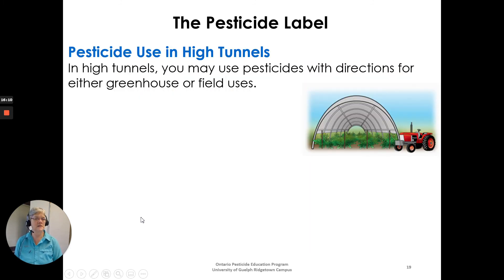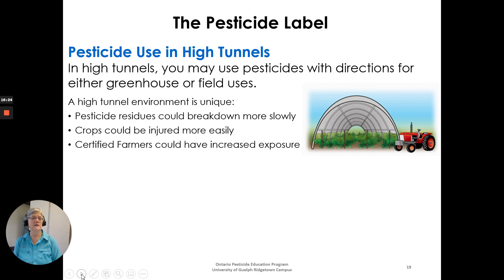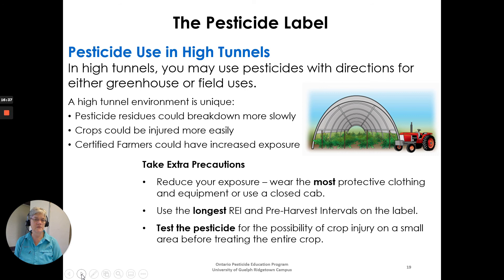In high tunnels, you may use pesticides with directions for either greenhouse or field uses. However, PMRA notes that the high tunnel environment is unique: pesticide residues could break down more slowly, crops could be injured more easily, and certified farmers could have increased exposure. Take extra precautions — wear the most protective clothing and equipment or use a closed cab, use the longest REI and pre-harvest intervals on the label, and test for crop injury on a small area before treating the entire crop.